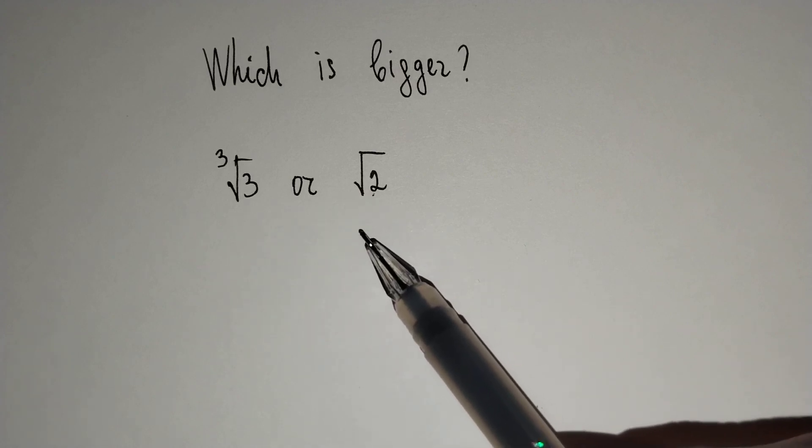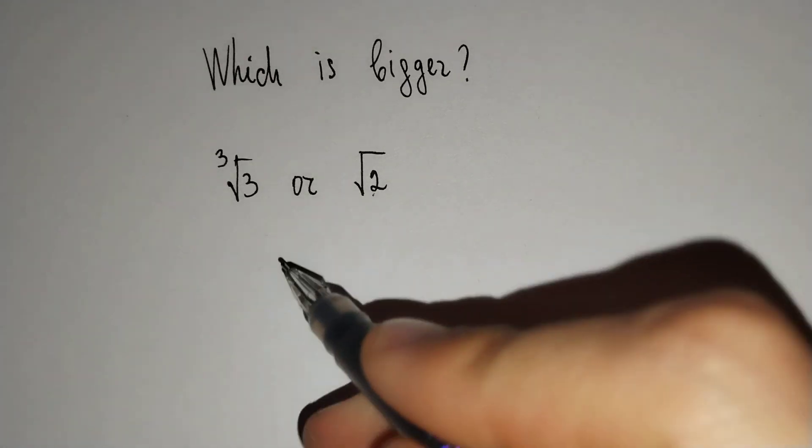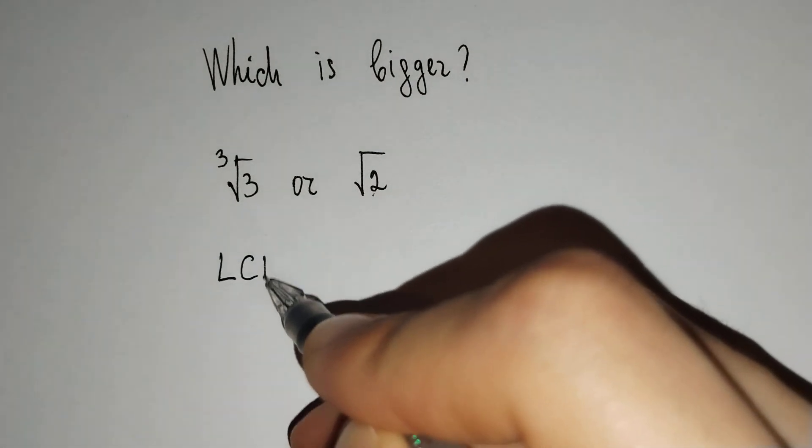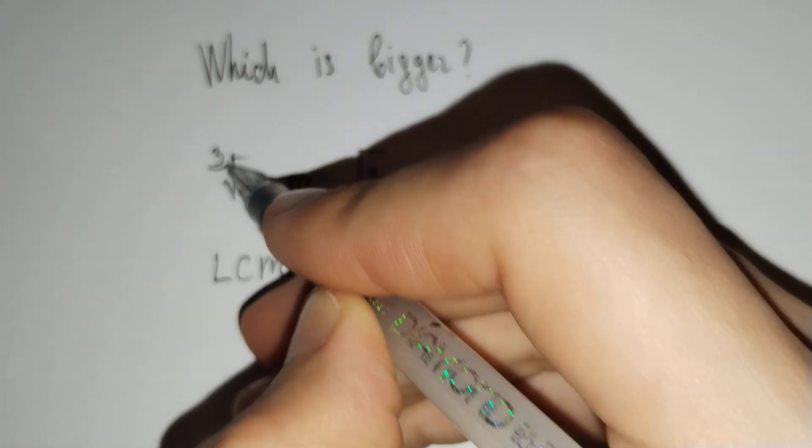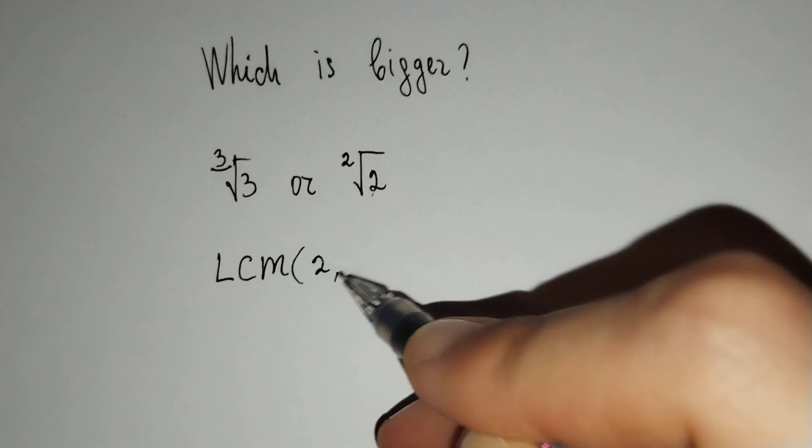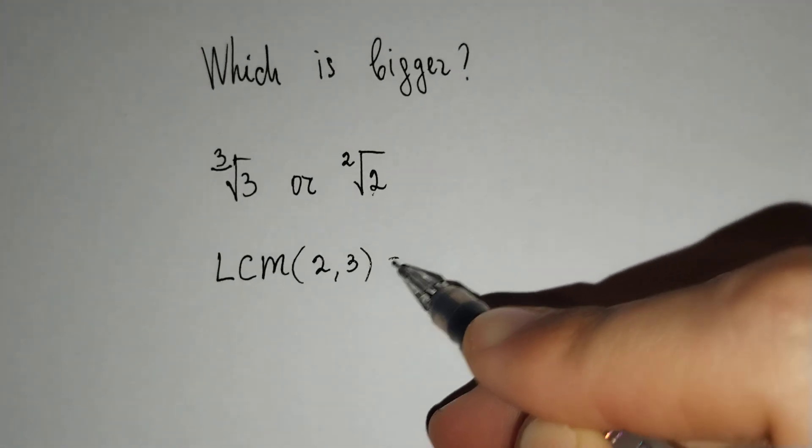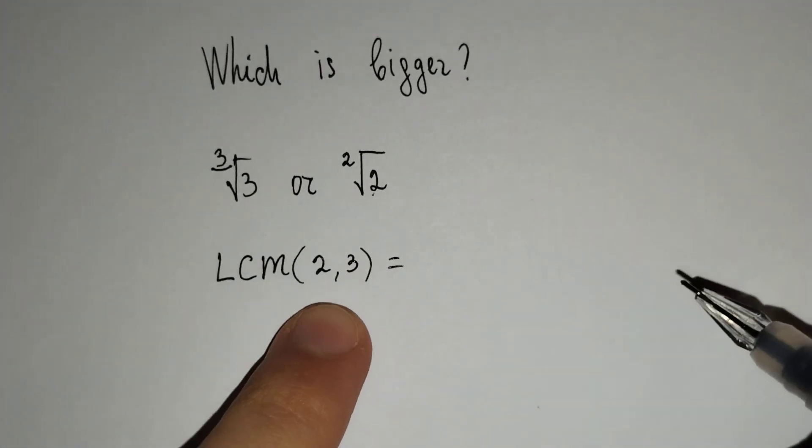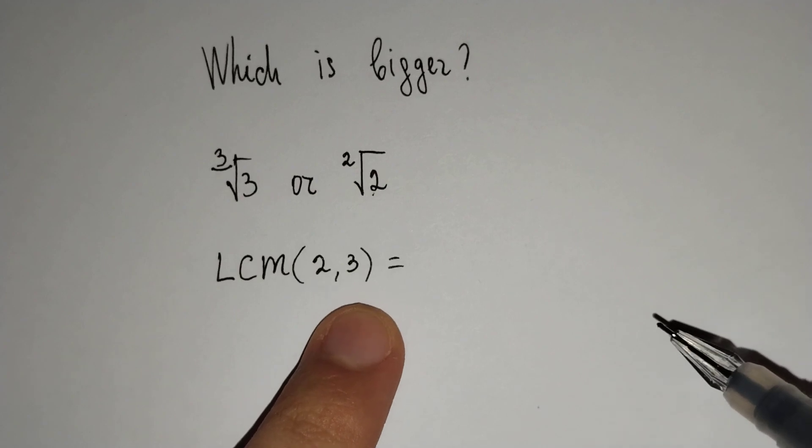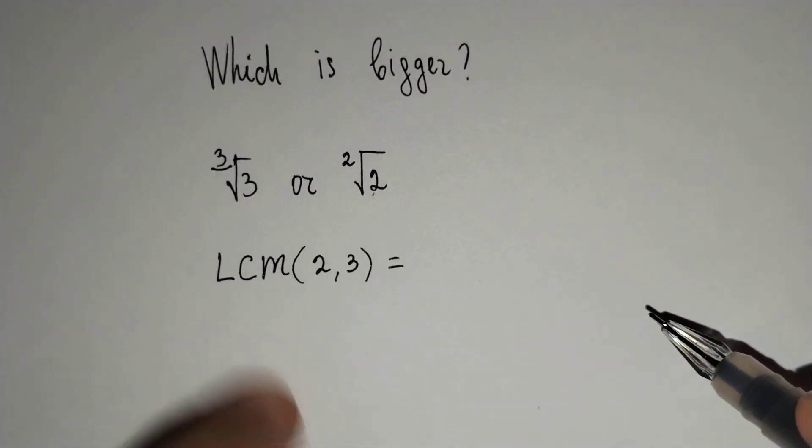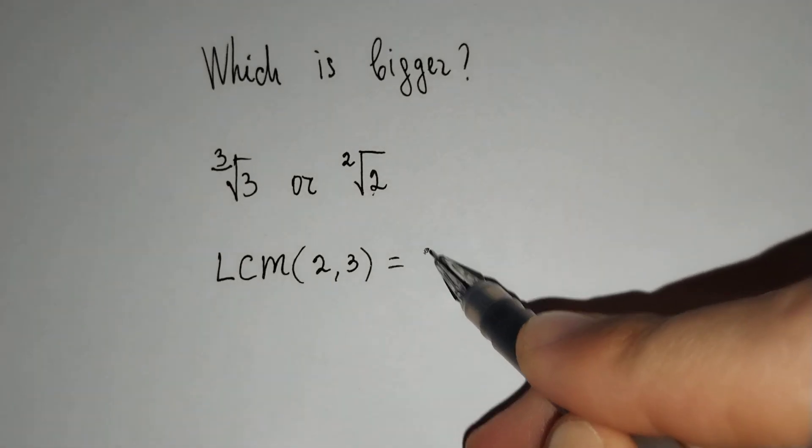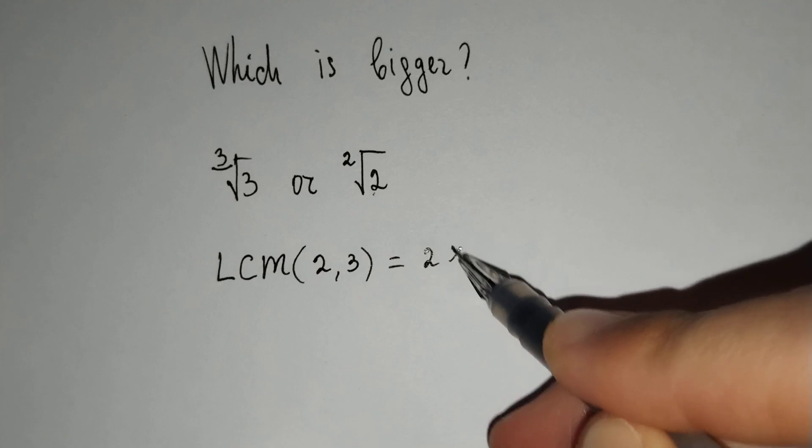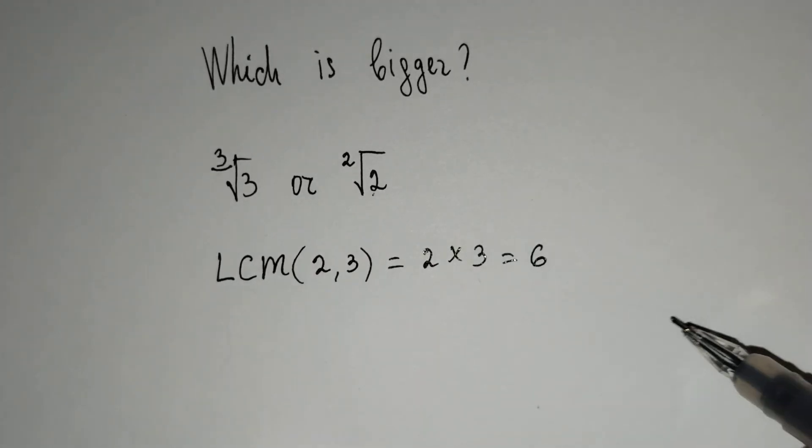Firstly, we should find the lowest common multiple according to the degrees. Lowest common multiple according to the degrees 3 and 2. You know that 2 and 3 are reciprocal prime numbers. That's why the lowest common multiple of 2 and 3 is equal to 2 times 3 and it does 6.